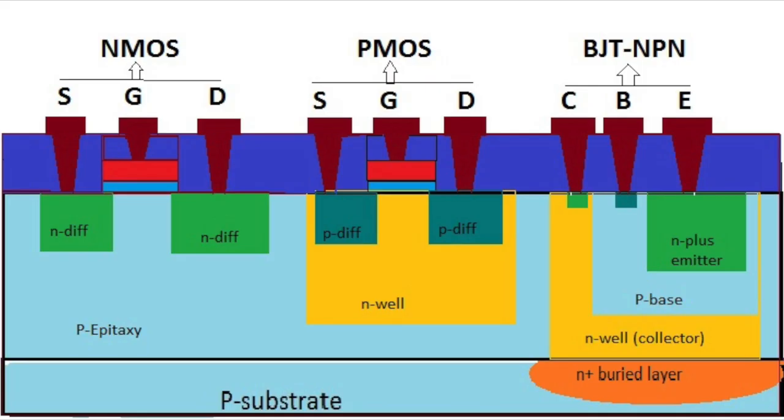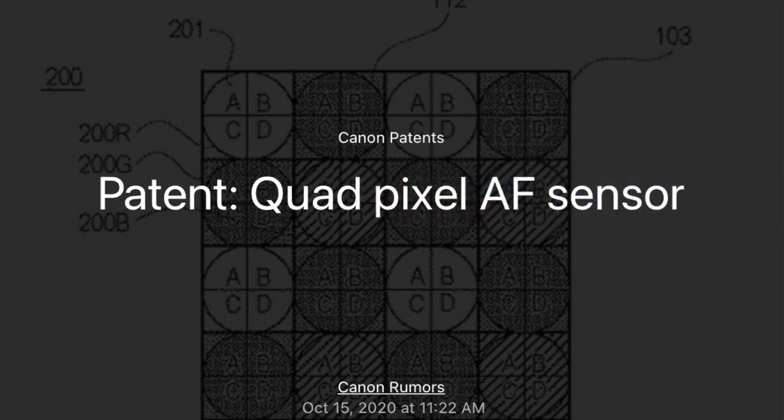Canon have researched this technology and developed patents since 2012. The reason for doing this, I believe, lies with another patent that Canon are working on — this time for Quad Pixel AF. Let's look at what might bring these technologies together. Canon have led the field with dual pixel technology and the impressive AI algorithms that give it the edge.